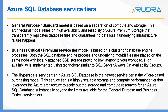Finally, we have the hyperscale service tier, which is the newest service tier available in the vCore-based purchasing model. It was in preview when this lecture was recorded. This service tier is a highly scalable storage and compute performance tier that leverages the Azure architecture to scale out storage and compute resources for an Azure SQL database substantially beyond the limits of general purpose and business critical service tiers. Unless you are working for a Fortune 500 company, it is unlikely you will go with hyperscale. Most of the time you will be working with general purpose or business critical service tiers.